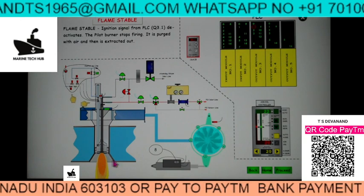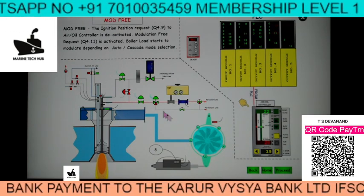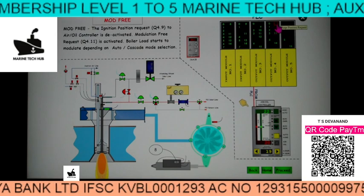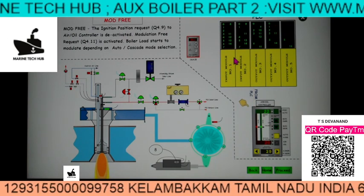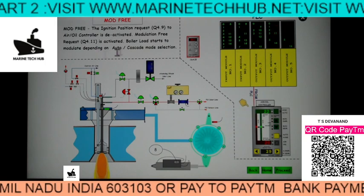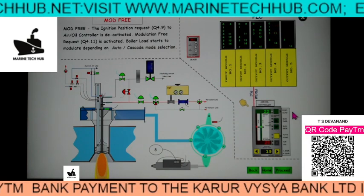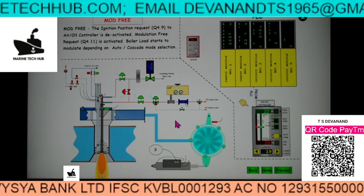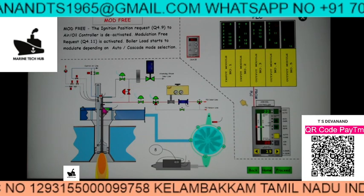You can see the boiler is now firing. This is modulation free mode — the last stage. In mode free, ignition position request 4.9 and purge position request are shown. The air control is deactivated. Modulation free request 4.11 is activated, and the boiler load starts to modulate depending on whether it is in auto or cascade mode. Once you want to stop the boiler, the automation purge valve will open and push any remaining oil out.